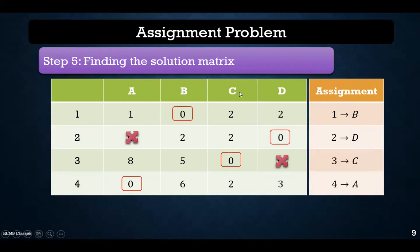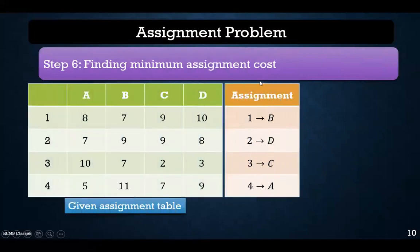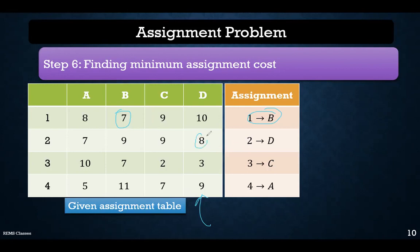We have obtained the assignment: 1-B, 2-D, 3-C, and 4-A. Now we will find the minimum cost. Based on this assignment and the original given cost matrix, we calculate the cost for each assignment. For 1-B, the cost is 7 units.